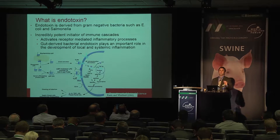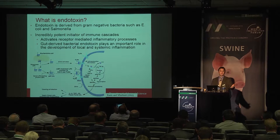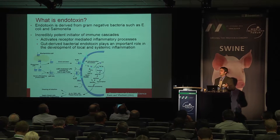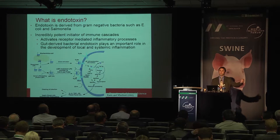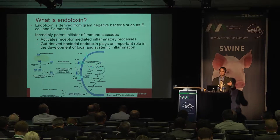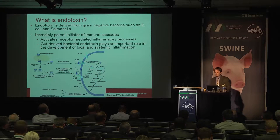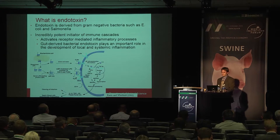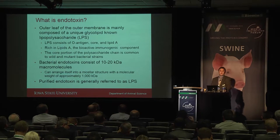Most of the endotoxin we refer to is probably coming from the gastrointestinal tract. However, endotoxin can also come through the lungs via bacteria in the lungs, so we can't always forget about the lungs. Most of us are more comfortable referring to the enteric environment, but there is some endotoxin activation and translocation that can come through the lungs.